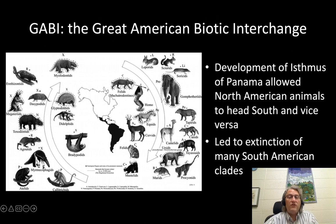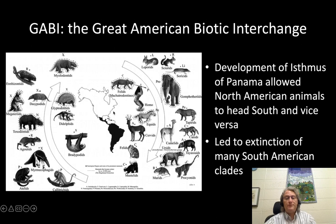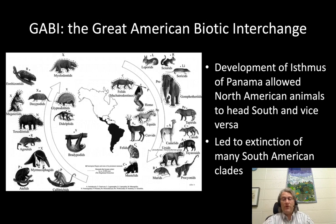And then giant ground sloths and toxodonts, which were sort of the South American native ungulate groups — those were once either present in the south, or in the case of the ground sloths, all the way up to Alaska. They aren't with us anymore, but they were here.